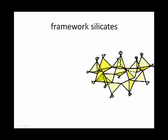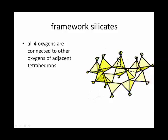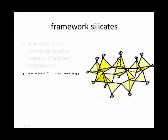Finally, we have the framework silicates, in which the silicon tetrahedrons are connected in all four directions. Every oxygen is part of two tetrahedra at the same time. Therefore, there's no need for any cations. Everyone's happy. This makes most framework silicates very, very strong.